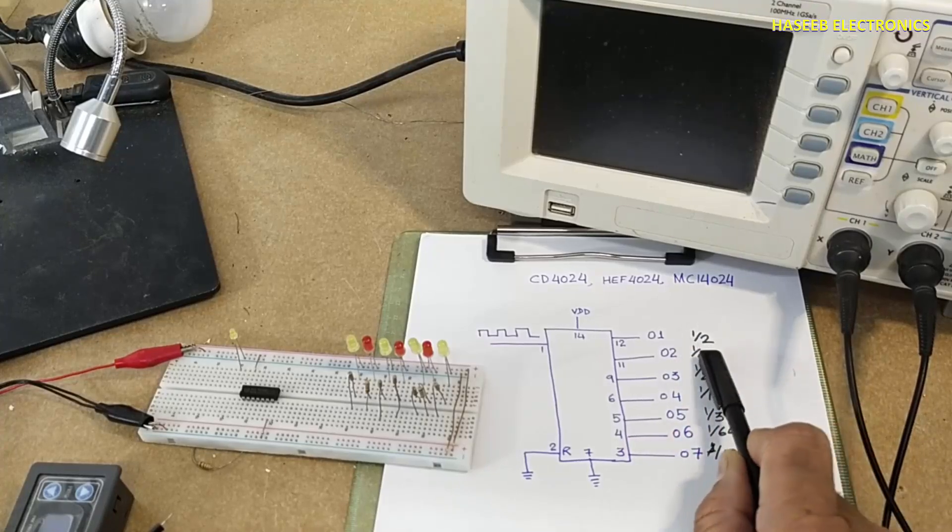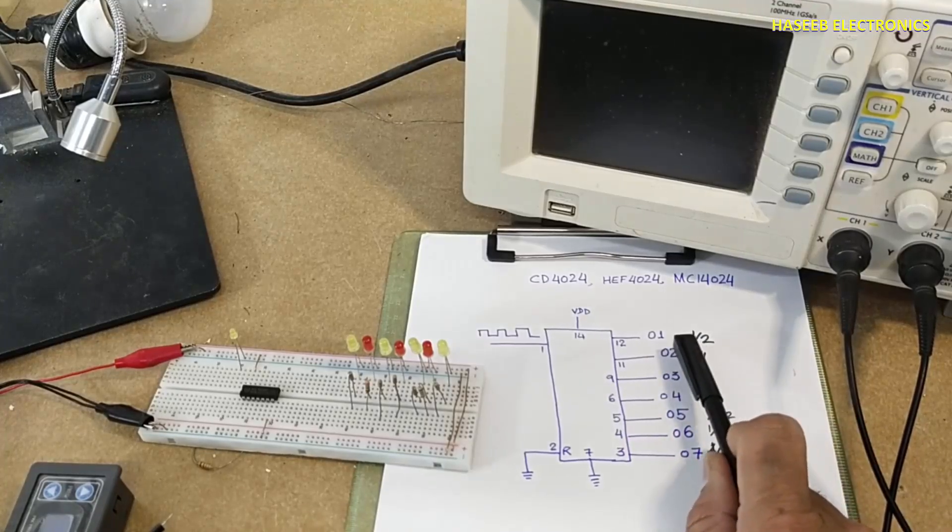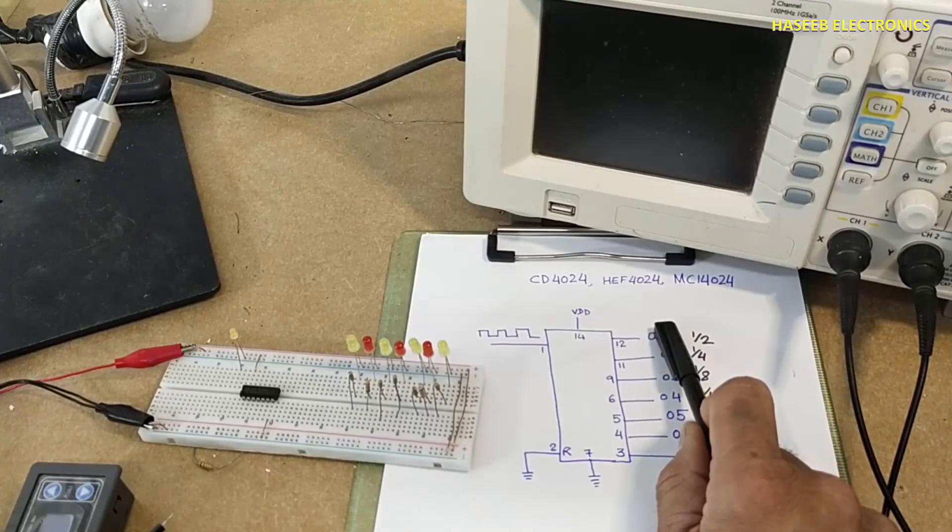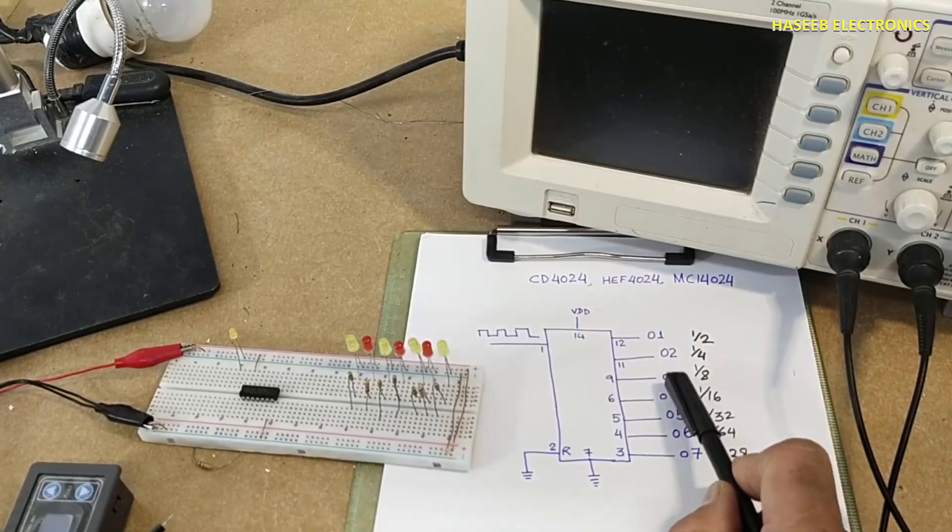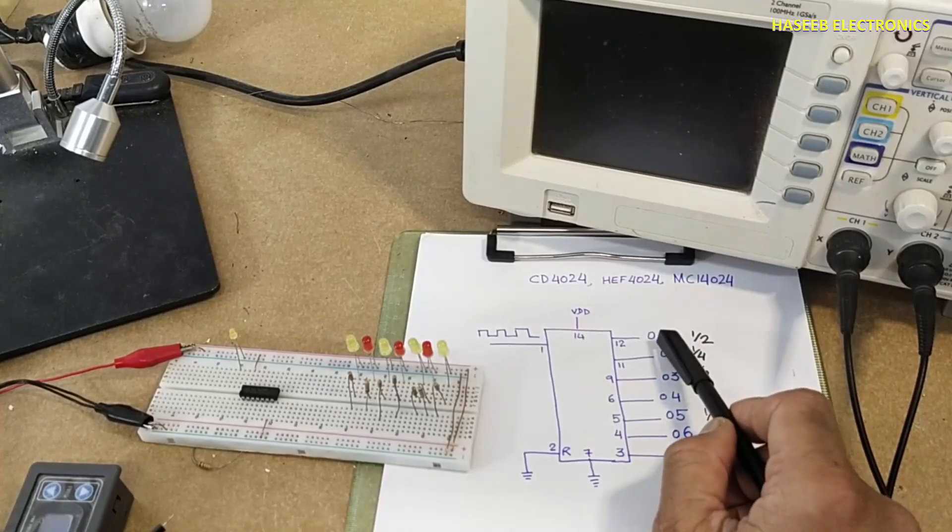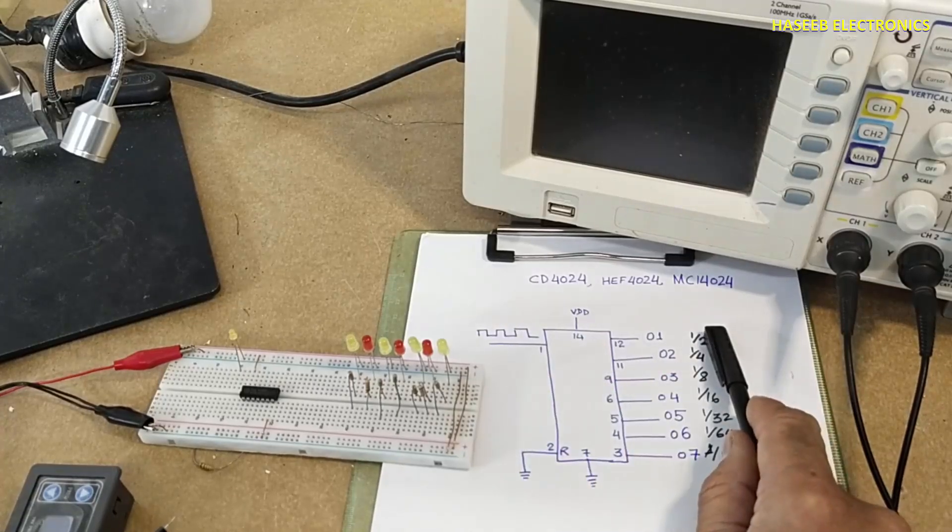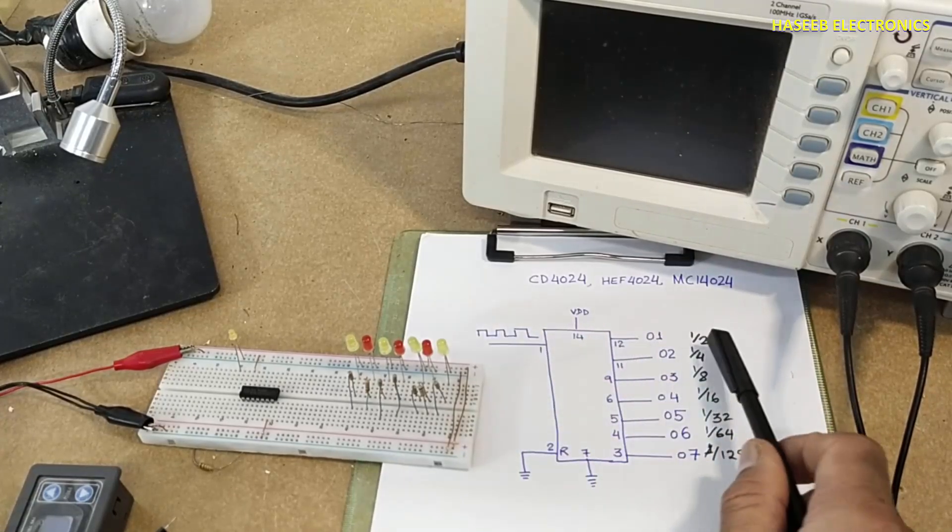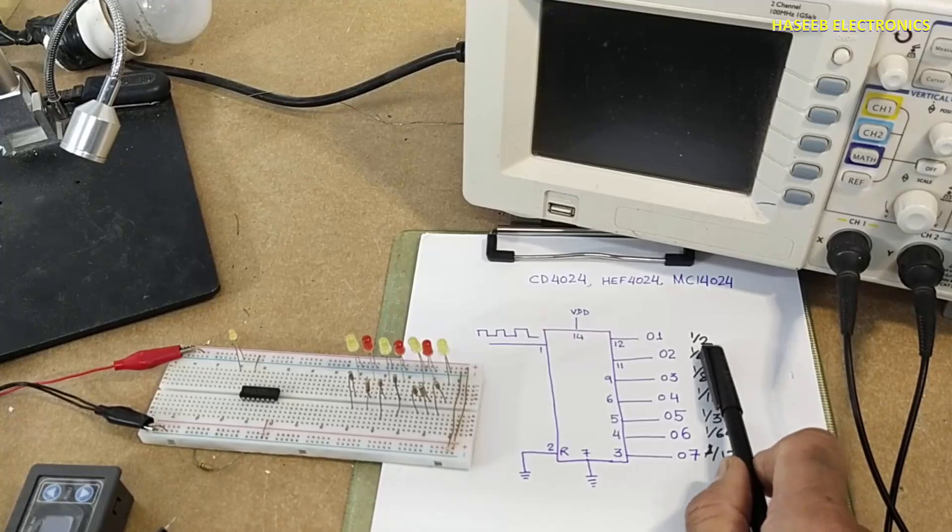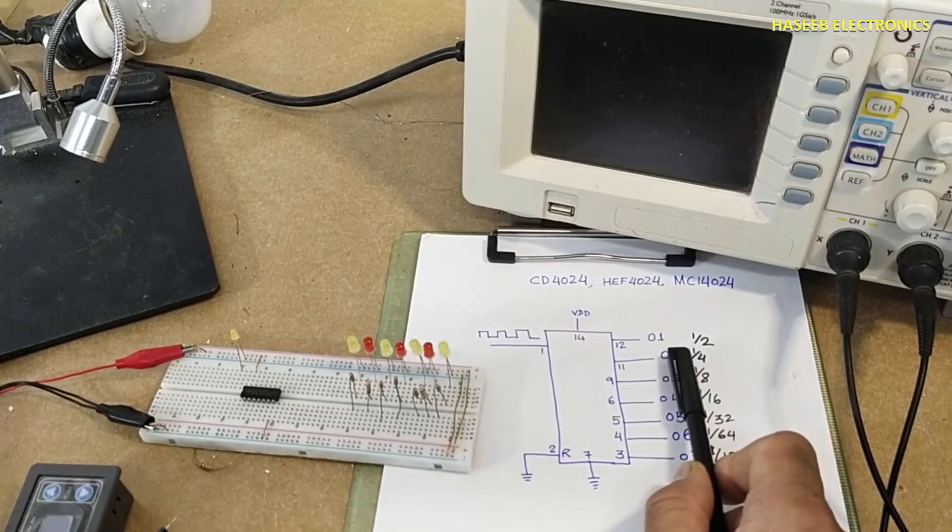Then next stage, the frequency will be half than the upper one. Each stage will provide half frequency than its superior one. At first output we will receive half frequency. Half after half, that is 1 over 4, that is output number 2.